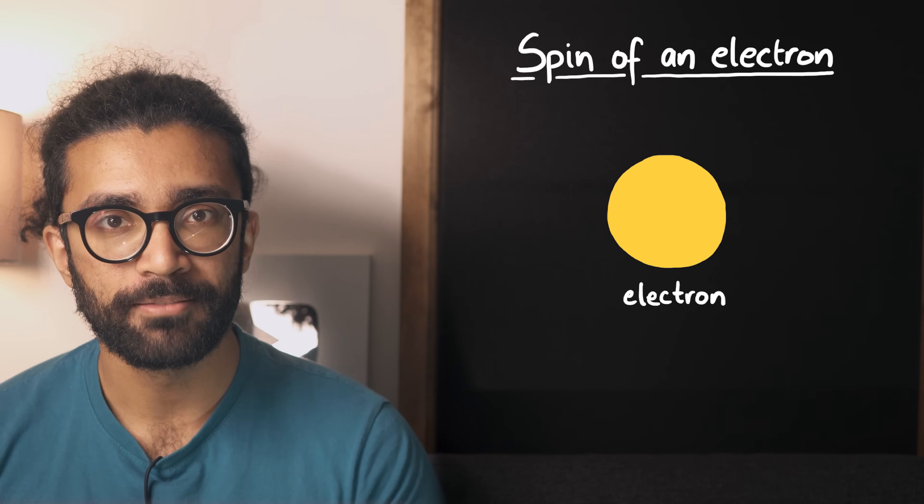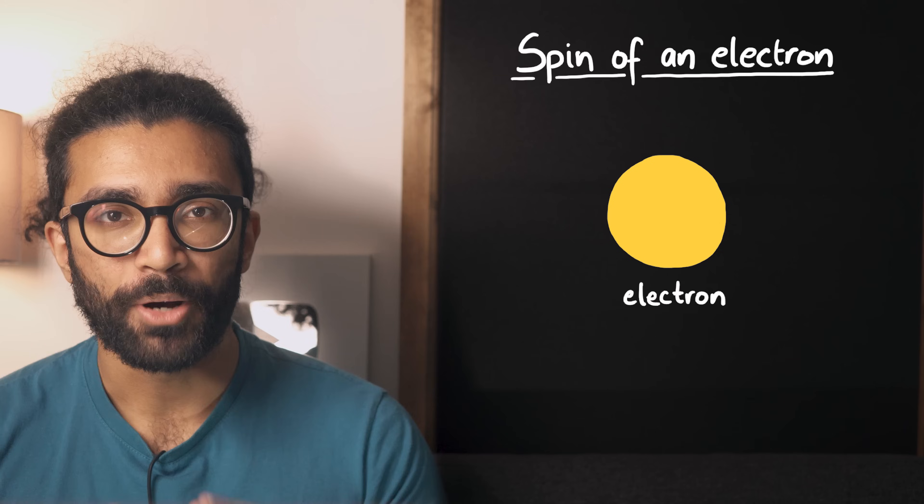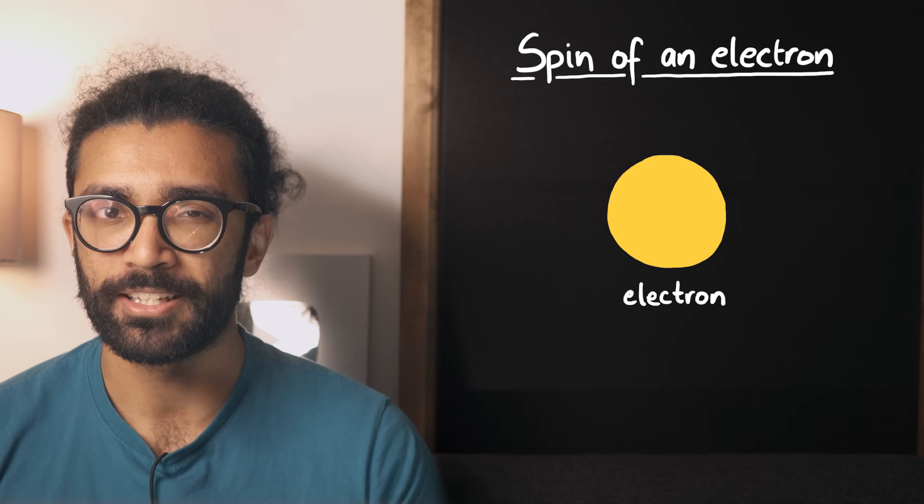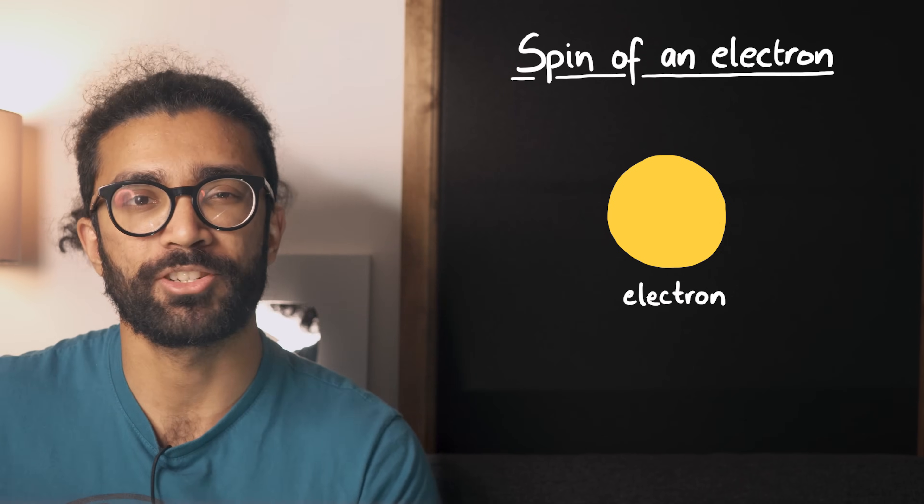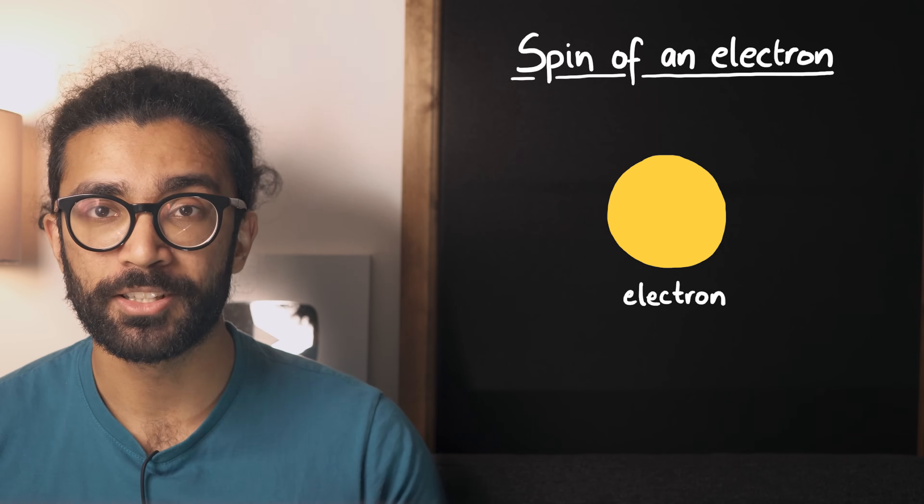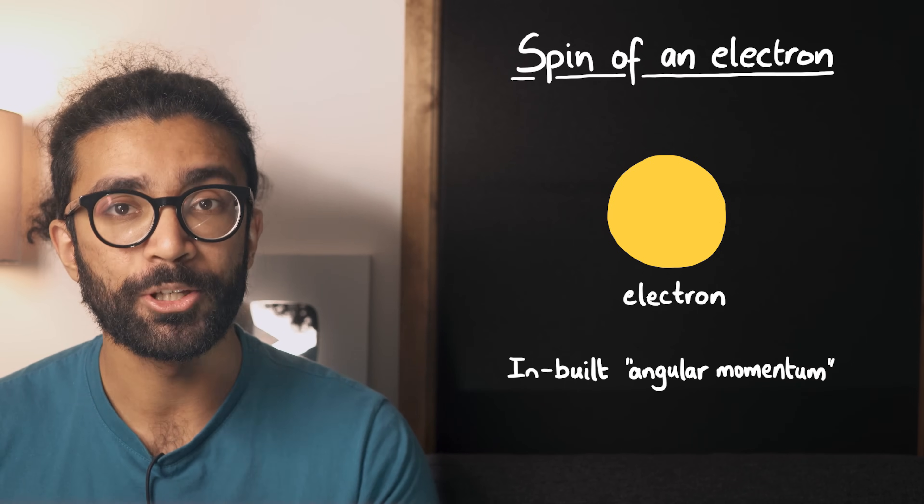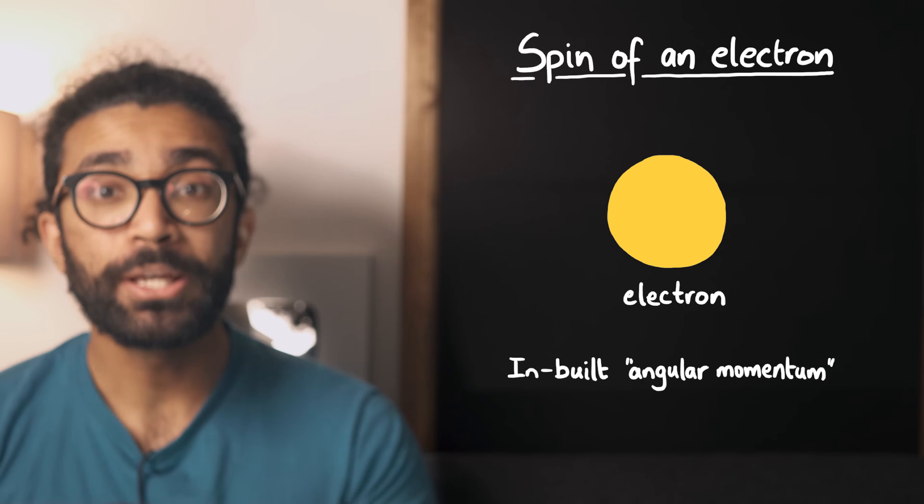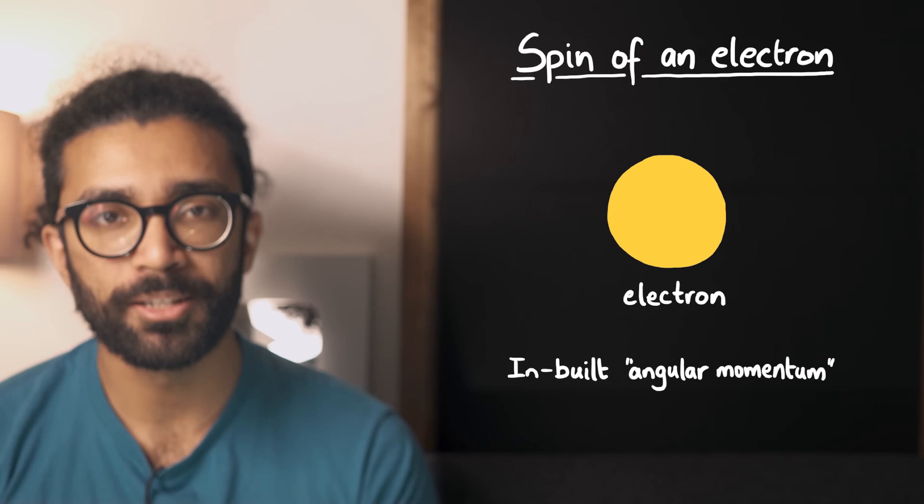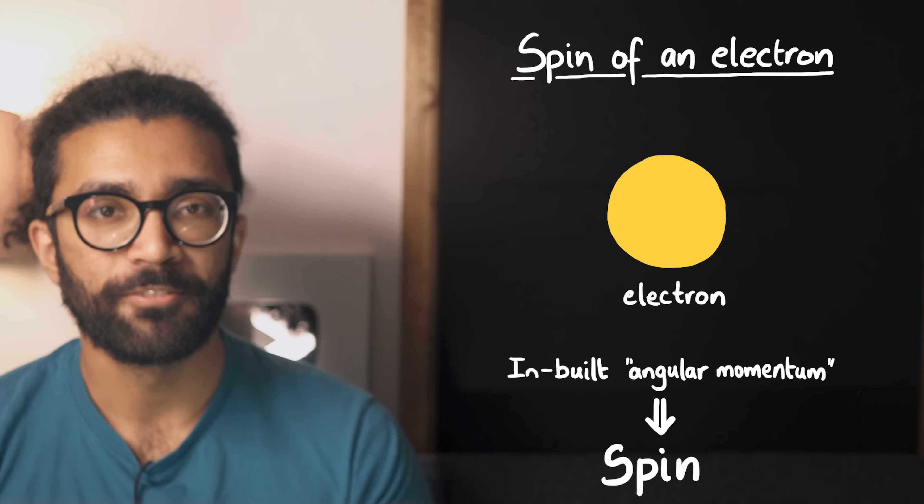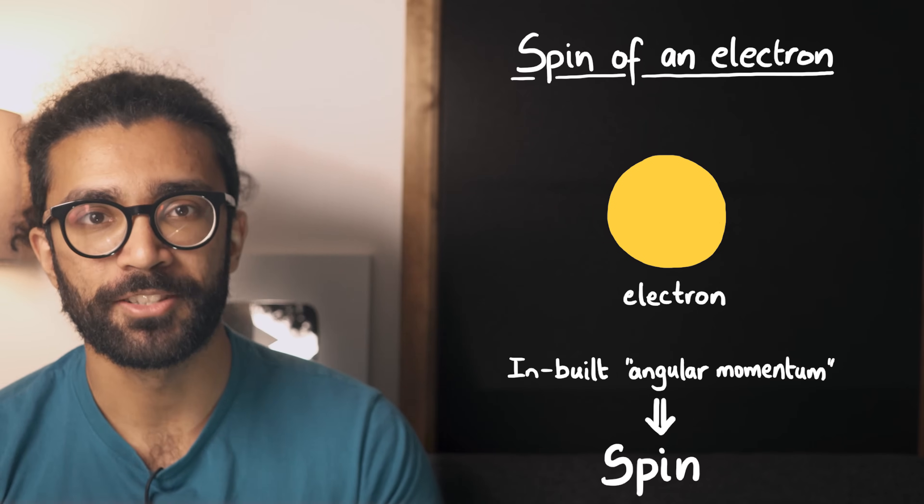For example, let's say we're studying the spin of an electron. Certain particles like electrons behave as if they are spinning, even though they're not actually spinning or moving along a curved path. In other words, they have some inbuilt angular momentum that we can measure. And we call this inbuilt angular momentum spin. More on this in my video on spin. Check it out up here if you haven't seen it already.